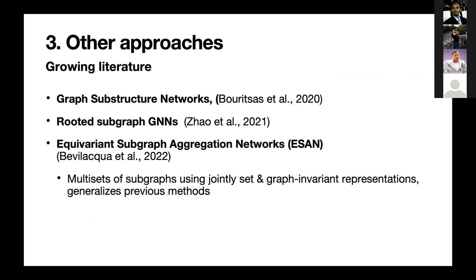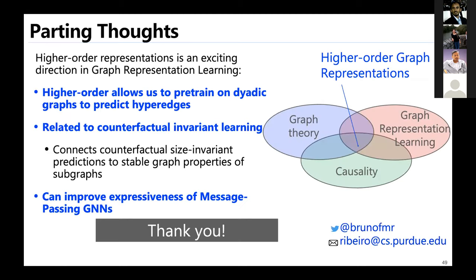There is actually a generalization of these approaches. To summarize: higher-order networks are very interesting for graph representation learning. Higher-order structures allow us to use static dyadic graphs to predict hyperedges, relate to counterfactual invariant learning in graphs, and I think network science will play a big role in bringing causality to graph representation learning. Higher-order structures can also improve the expressiveness of message-passing GNNs. They bring many different areas together — network science, causality, and graph representation learning. Thank you, I'm open for questions.